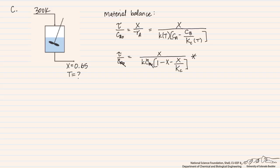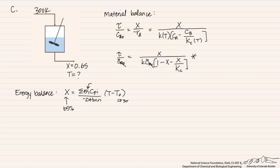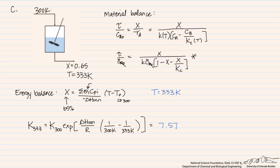Fortunately, we can use the same energy balance approach as before. With a conversion of 65%, the same feed stream composition, the same θ_i·C_Pi sum of 235 J/mol·K, the same heat of reaction, and the inlet temperature still at 300 Kelvin, the only unknown is the reactor temperature T. Solving gives T ≈ 333 Kelvin. We then calculate the equilibrium constant at 333 Kelvin using the van't Hoff expression — changing only the temperature to 333 K and the reciprocal temperature difference — and find K = 7.57.